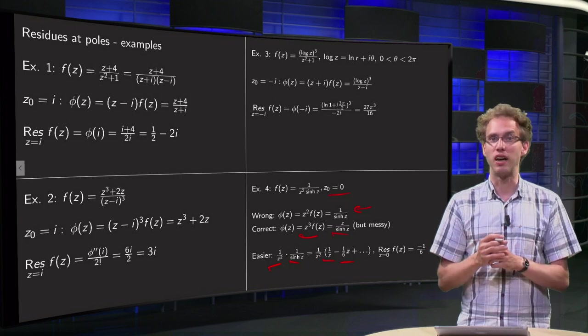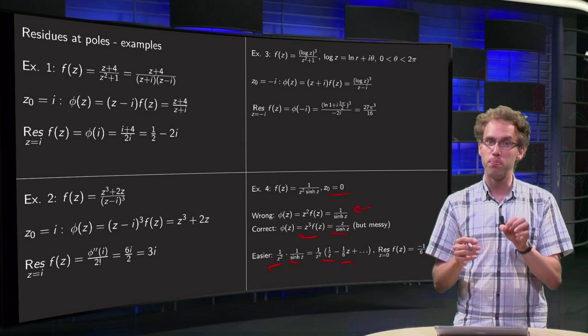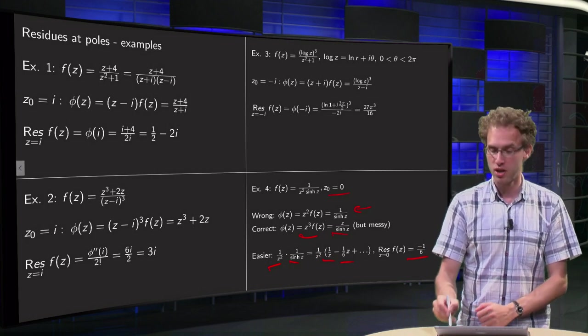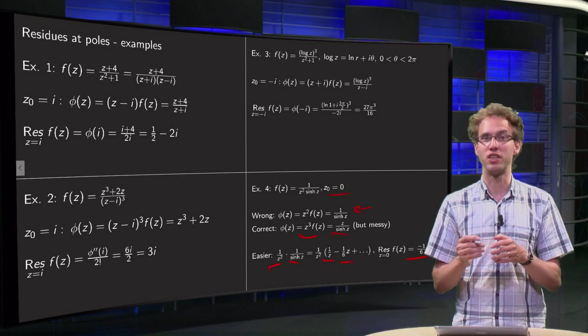That computation is kind of complicated, but once you have it, you can pick out the 1 over z term, which has a coefficient of minus 1 over 6, so the residue equals minus 1 over 6.